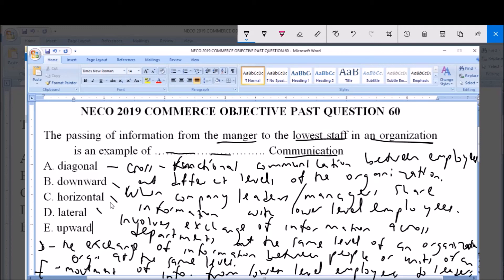So from the descriptions we have given, Option B, which is downward communication, involves the company leaders or managers passing information to the lower-level employees. So that is more or less the same with the description given to us in the question.